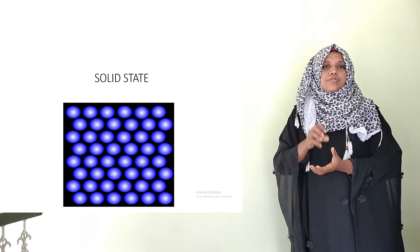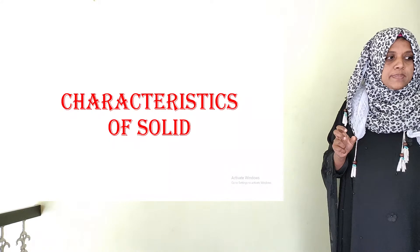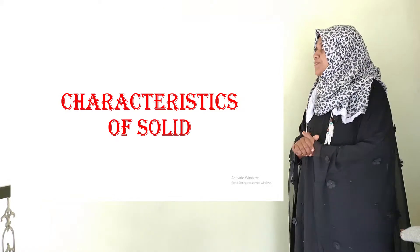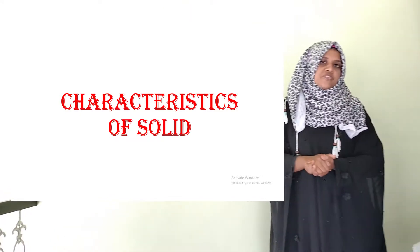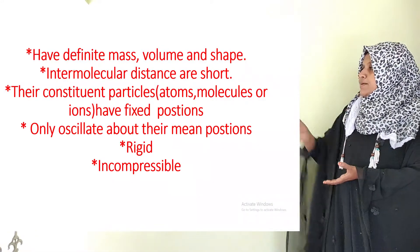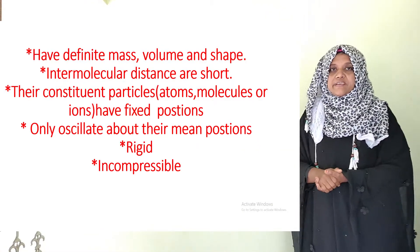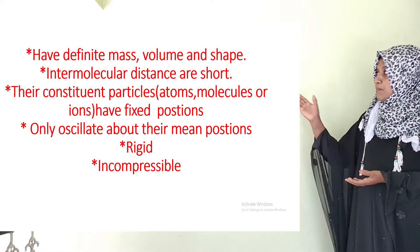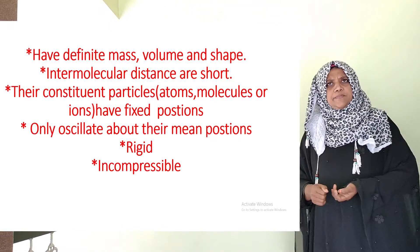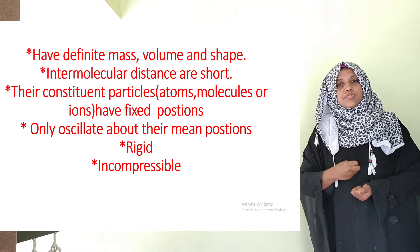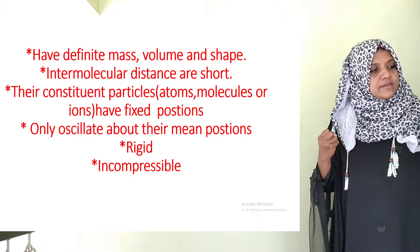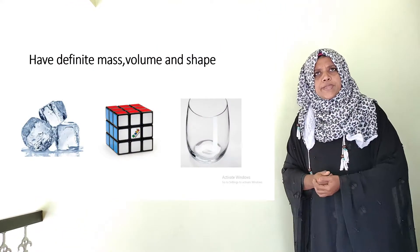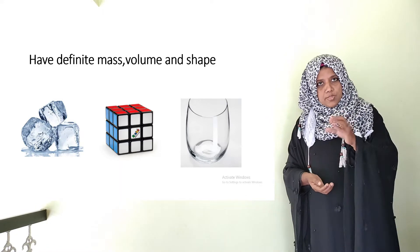In this chapter we focus on solid state. Solid state — the particles have definite mass, volume, and shape. That is why it is called solid state.